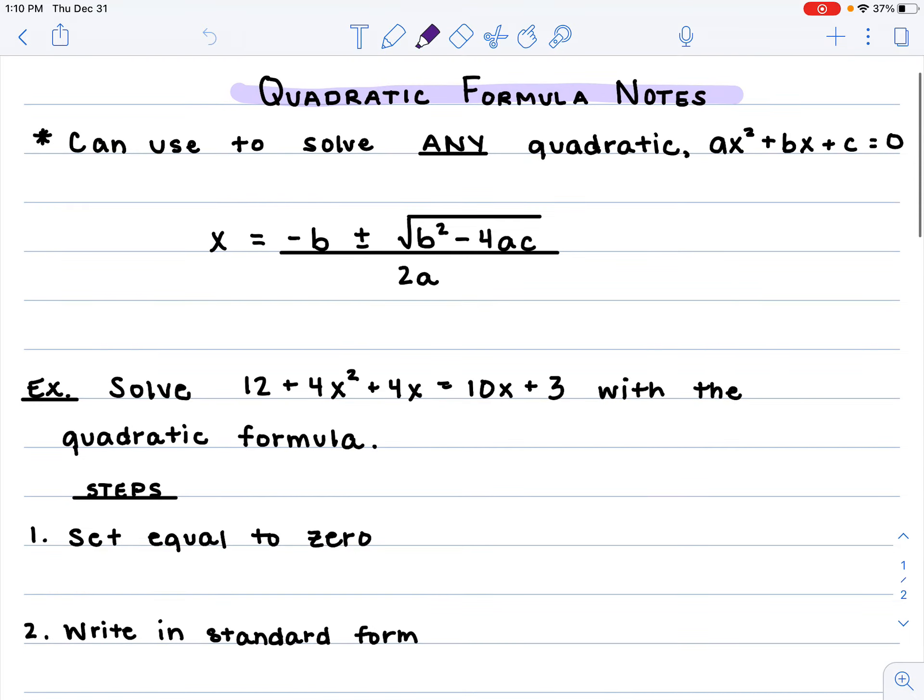So the big thing here is you can use this to solve any quadratic. Any quadratic out there, we can always solve it. And here is our quadratic formula: x equals the opposite of b plus or minus the square root of b squared minus 4ac, all over 2a.